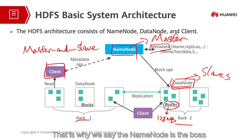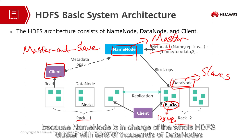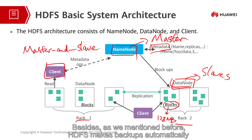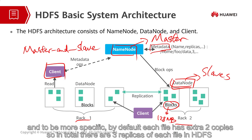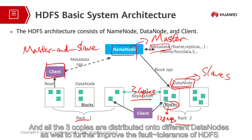That is why we say the name node is the boss, because the name node is in charge of the whole HDFS cluster with tens of thousands of data nodes. Besides, as we mentioned before, HDFS makes backups automatically. By default, each file has two extra copies, so in total there are three replicas of each file in HDFS. All three copies are distributed onto different data nodes to further improve the fault tolerance of HDFS.